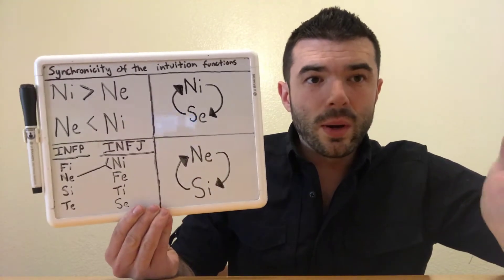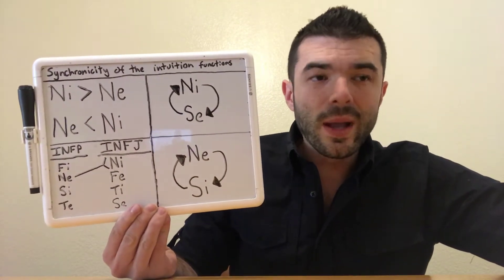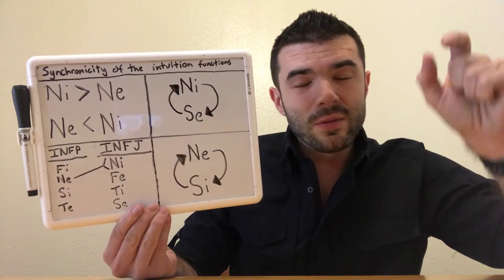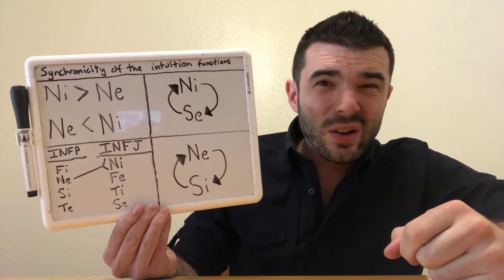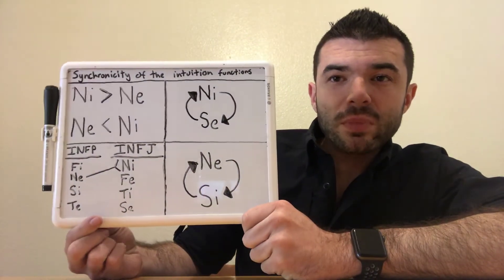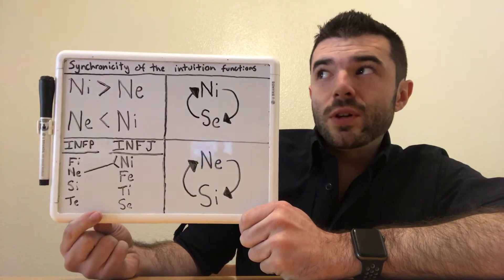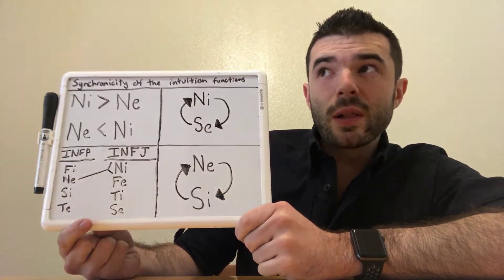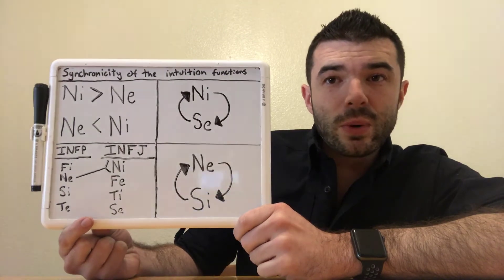That is extroverted intuition. What I want, willpower, where there's a will there's a way, that's introverted intuition. Sorry if I got those a little confused there a second ago, but sorry not sorry. Anyway, so introverted intuition very focused like a sniper rifle, extroverted intuition like a shotgun in terms of how it's aware of the future.